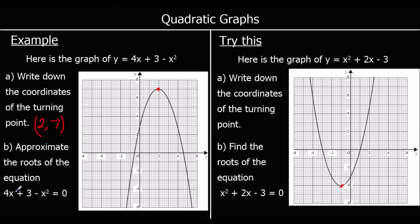Next, we approximate the roots of the equation 4x + 3 - x² = 0. To find the roots on a graph, we look at where y equals 0, which is where it crosses the x-axis. These two points are the roots, and they are at approximately 4.6 and -0.6. It's a quadratic, so we usually get two solutions.